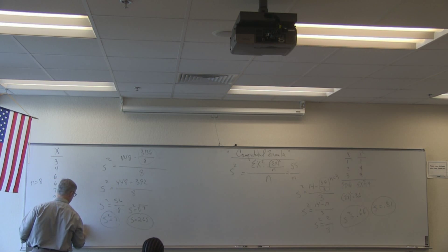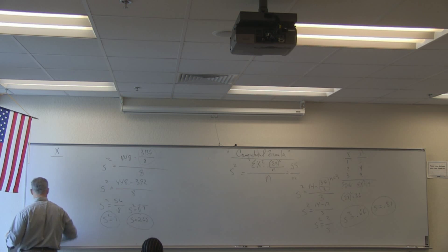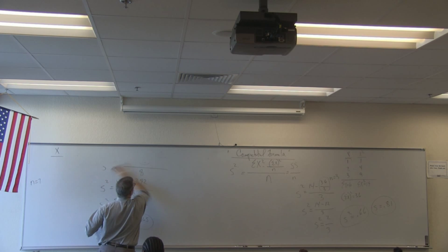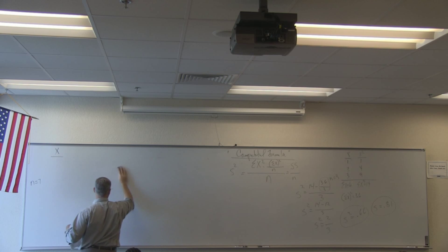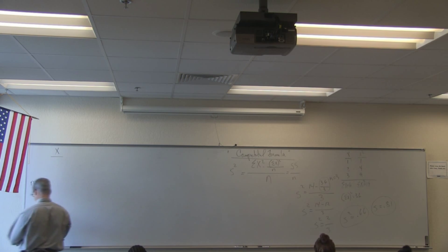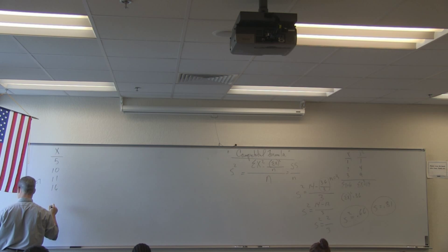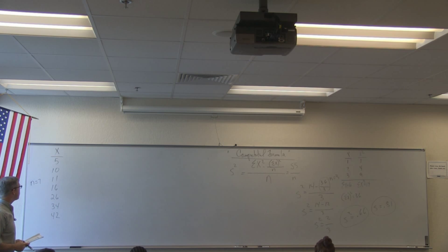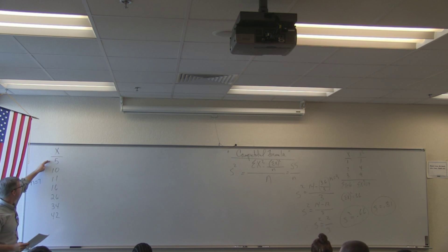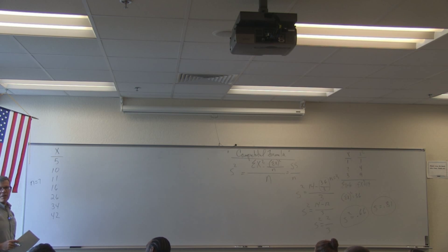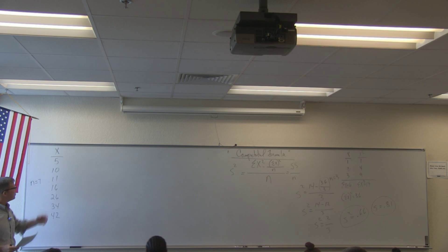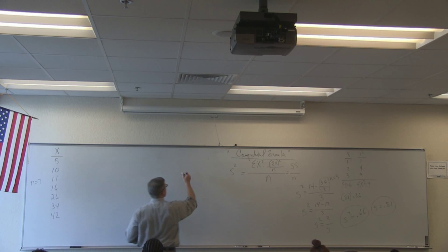Let's suppose we have a data set with seven numbers, with a range from 5 to 42. Do you think our variance and standard deviation will be bigger or smaller than the ones we've had before? Probably more, because we have more dispersion.